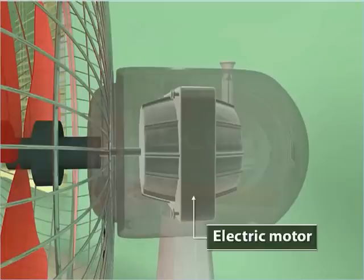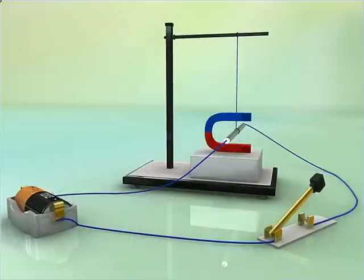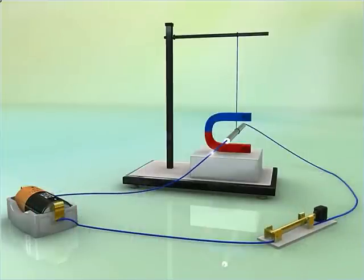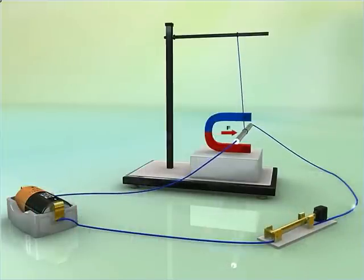An electric motor works on the principle that if an electric current is allowed to flow in a conductor placed in a magnetic field, the conductor experiences a force.